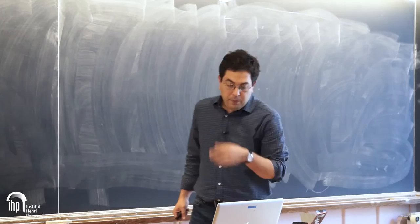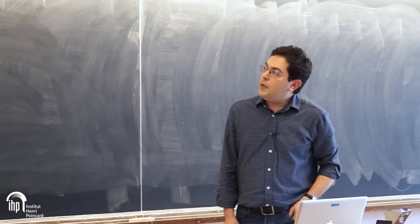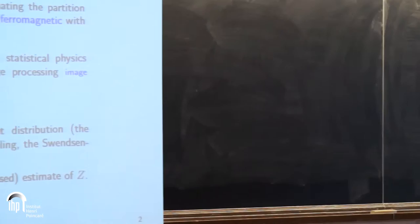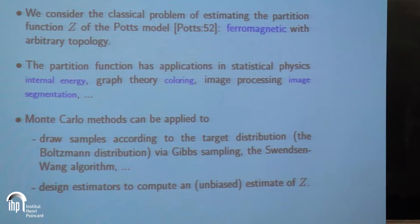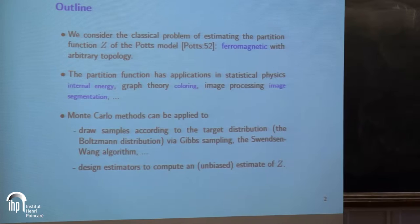We look at the problem of computing the partition function, which I denote by Z, of the Potts model. My assumption is that the Potts model is ferromagnetic, but the topology is arbitrary. Most of my slides are about two degrees, but you can generalize the technique for any graph structure. I have a few lines about the applications of the partition function of the Potts model.